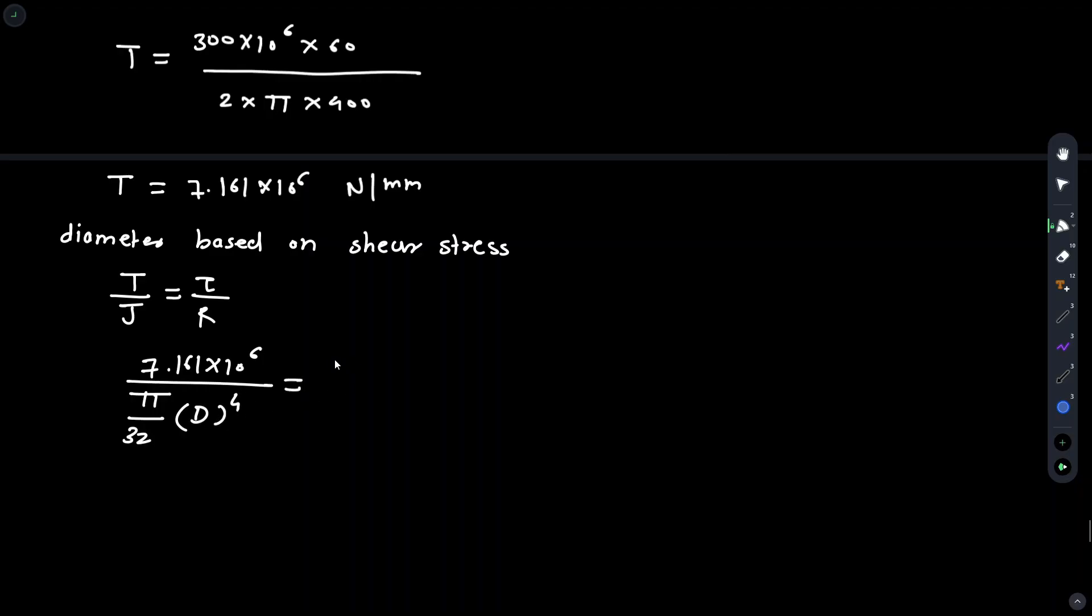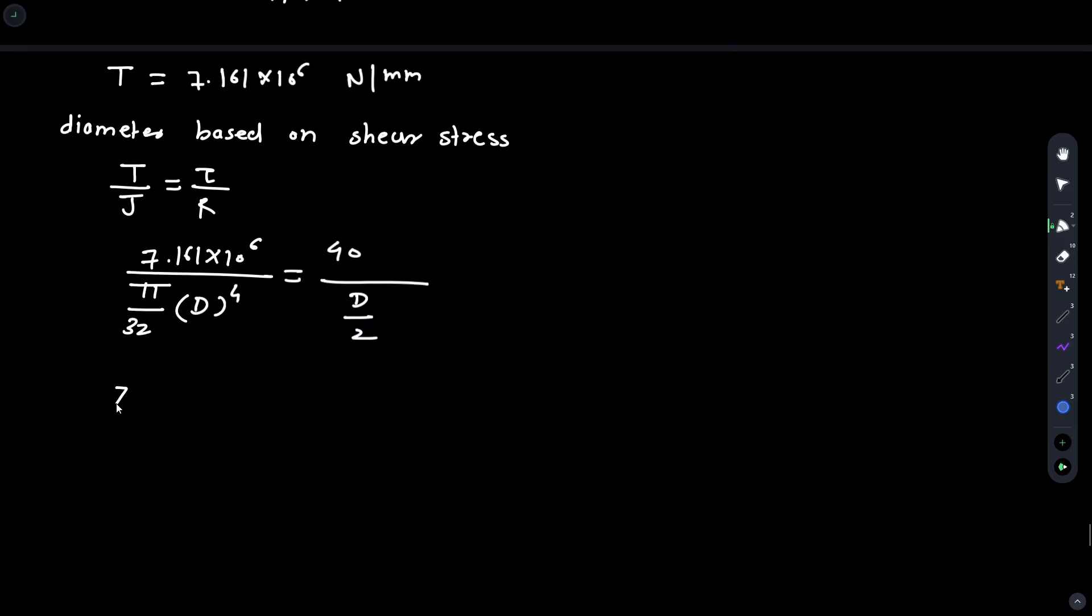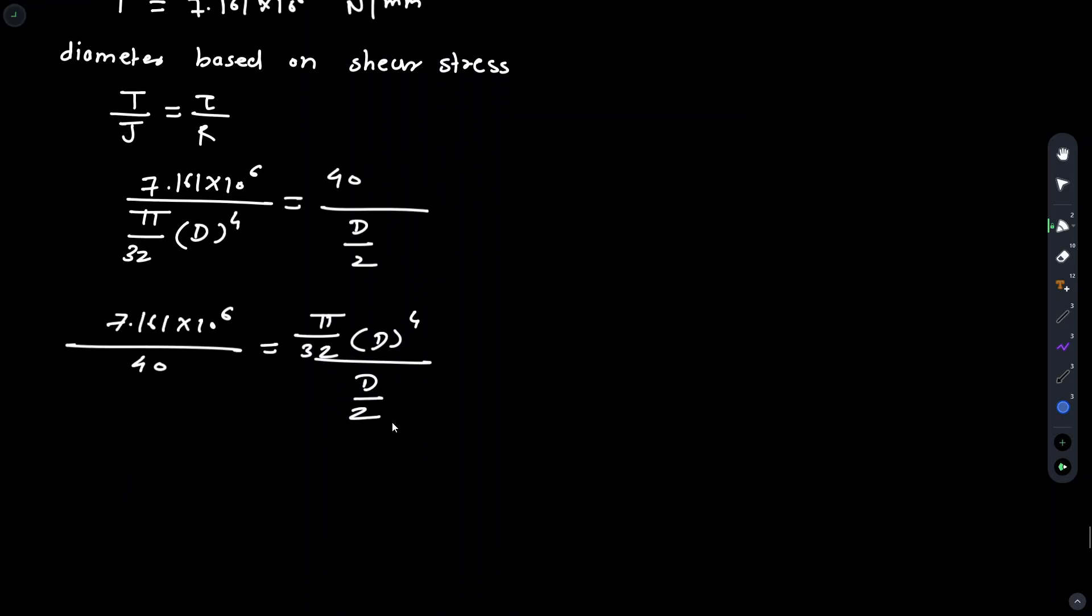Rearranging these, 7.161 into 10 raised to 6 divided by 40 equals pi by 32 D raised to 4 divided by D divided by 2. First solve the right hand side equation. We get pi by 32 D raised to 4 divided by D divided by 2 equals pi by 16.